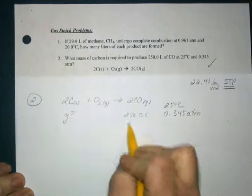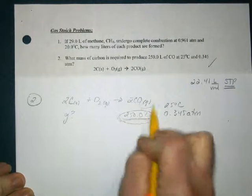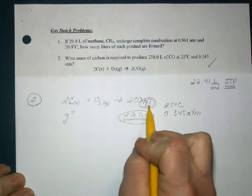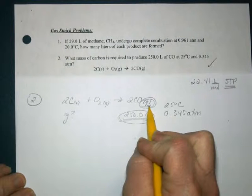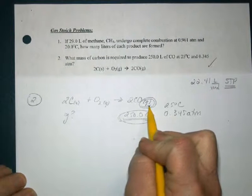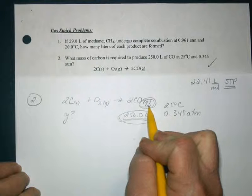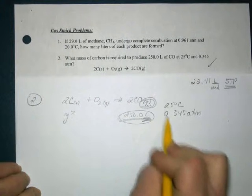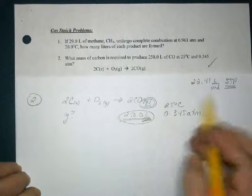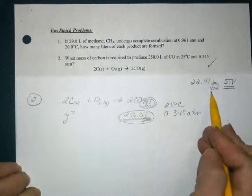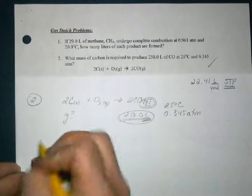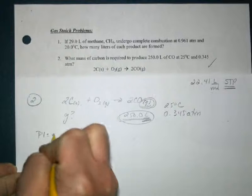Well, first I'm beginning with my gas. I know that if I need to, I can rely on an ideal gas law. If I'm given volume and I'm not at STP, so I can't use molar volume to get moles, but I sure can use PV = nRT.